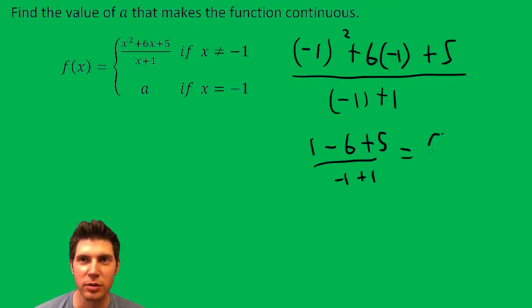This ends up being zero over zero. So zero over zero, it's not really a number. We can't make that equal to a.